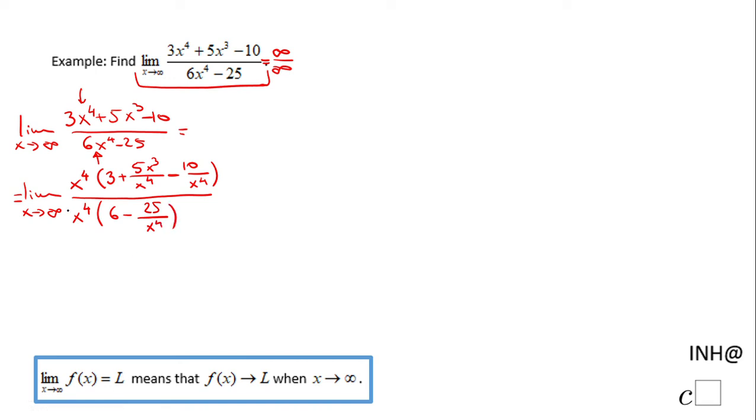If you notice these two cancel out that's the reason we factor out. Then we can see this quotient when x is getting larger and larger this quotient is going to get closer to 0.